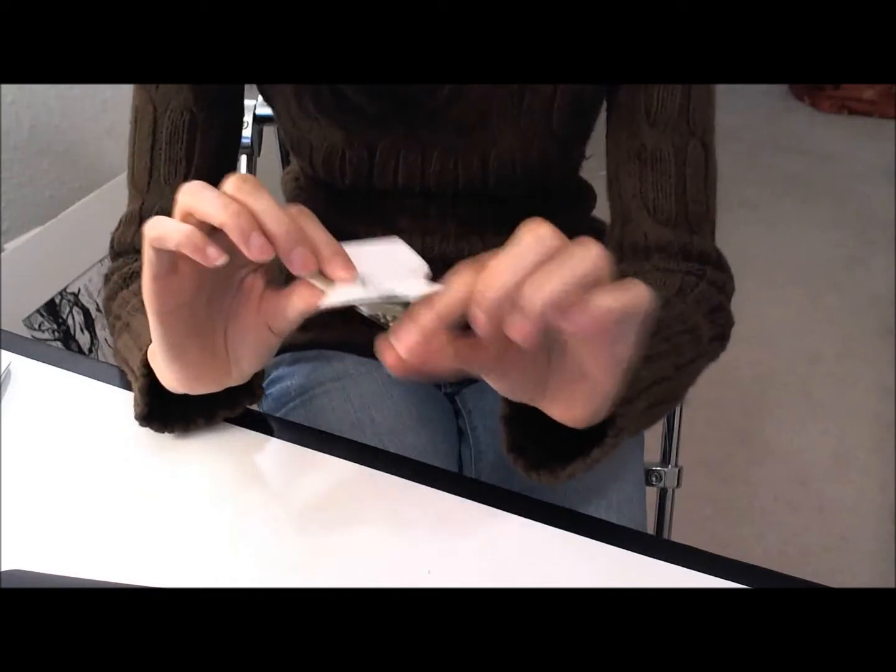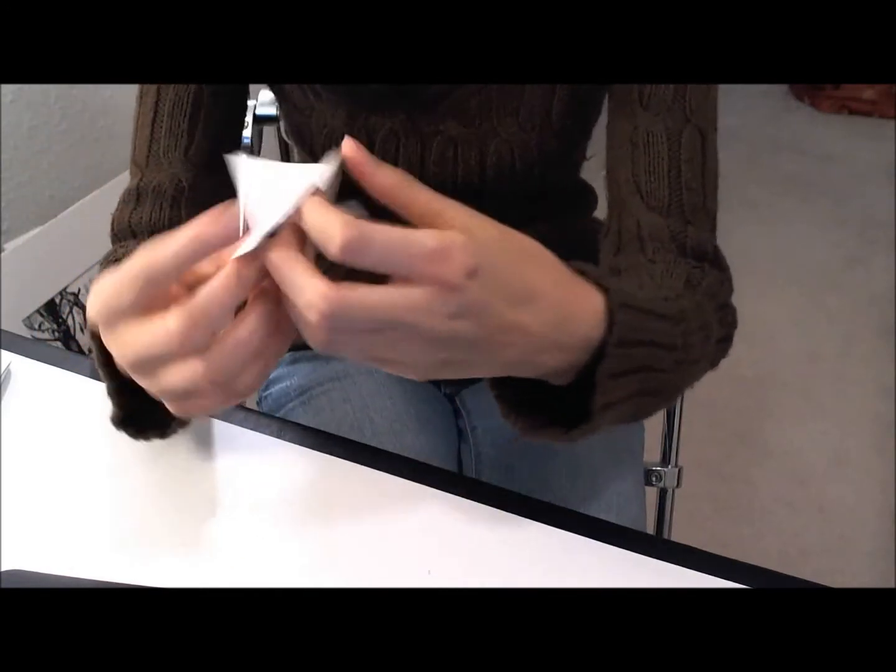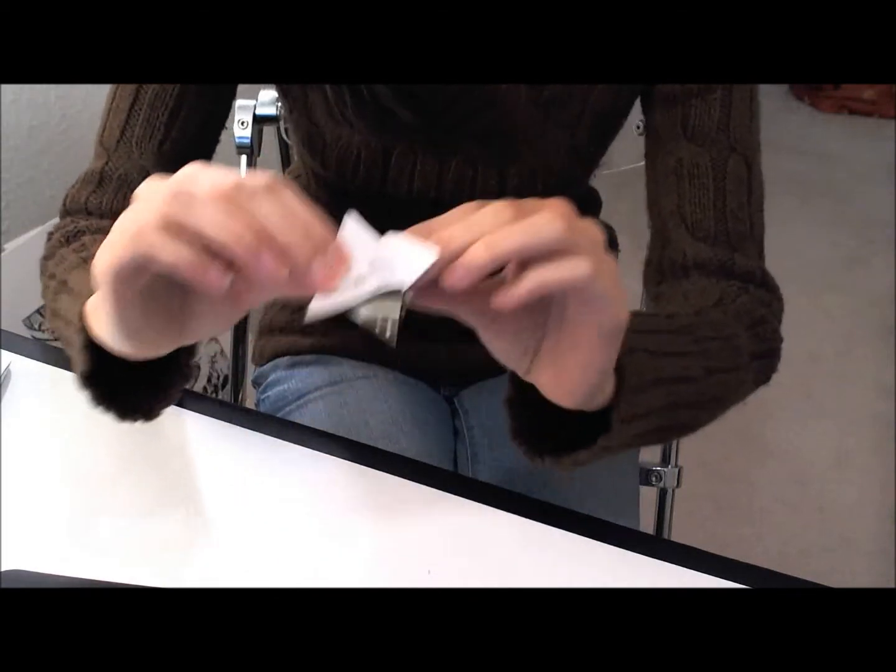You'll then take the flaps and interlace them kind of like you would with a moving box so that they all overlap one another.